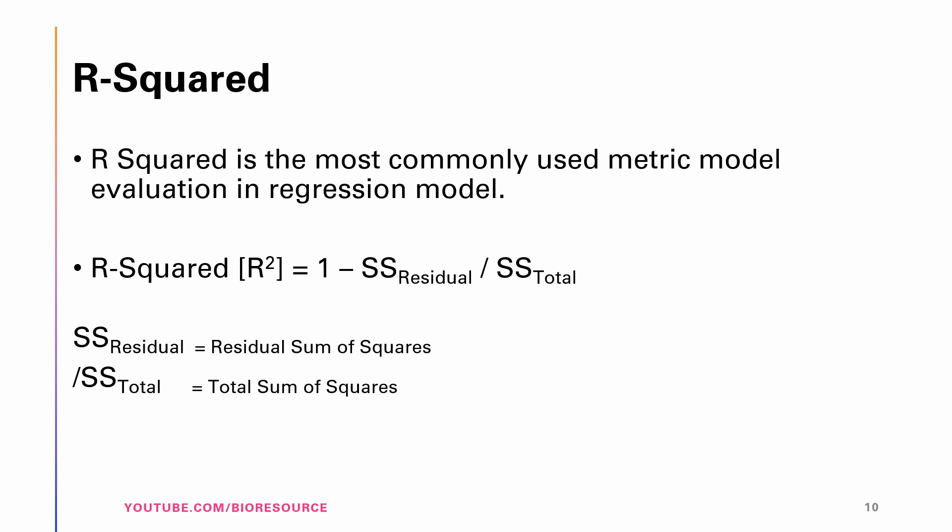One of the main drawbacks of R-squared is that its value increases when more variables are added to the dataset. To overcome this, adjusted R-squared is used. Adjusted R-squared only considers the variables that are important for the model and shows real improvements in the model.